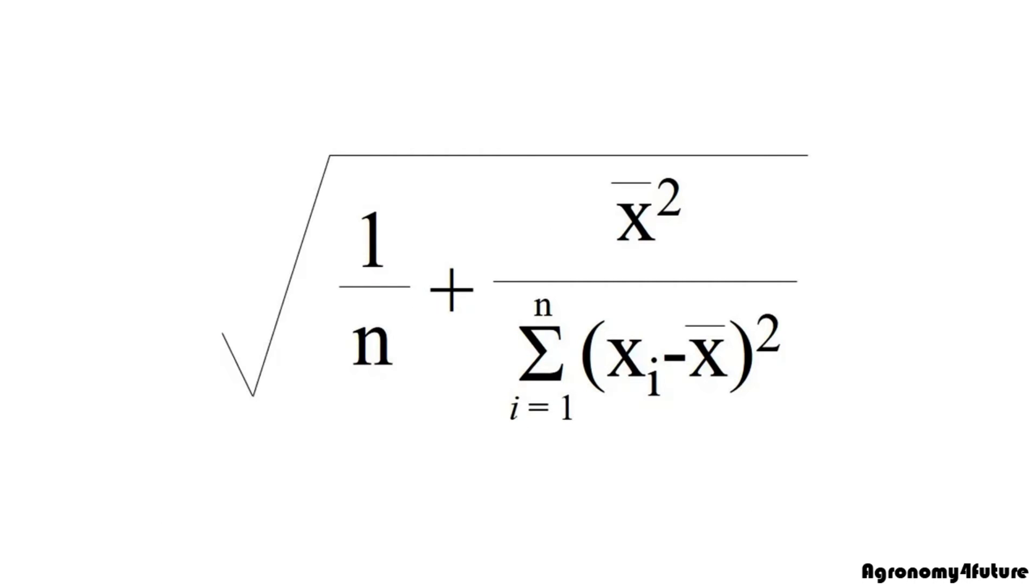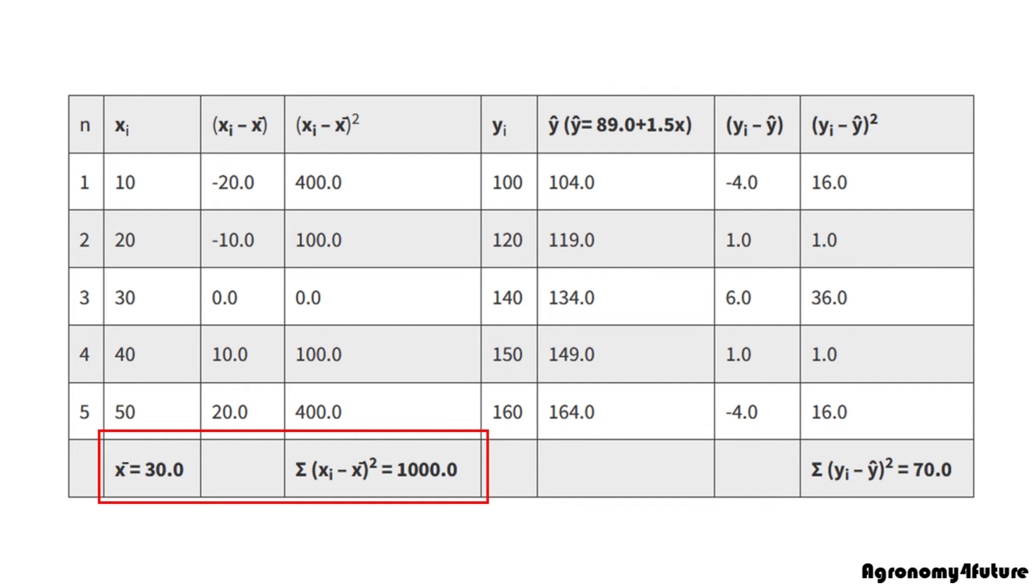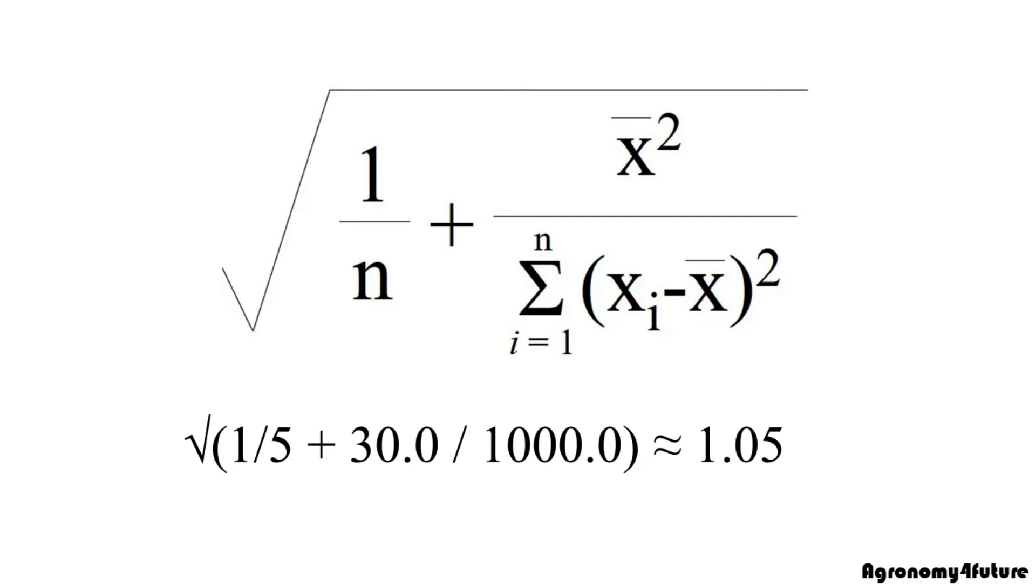Let's calculate the other equation. We already calculated sum of squared of x and the mean of x. Please see the table. So, the equation will be 1.05.